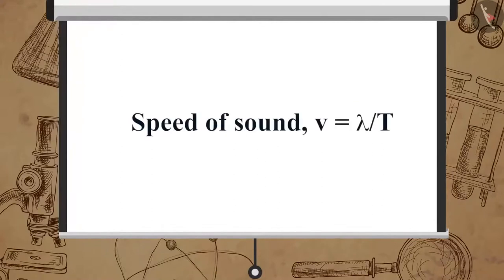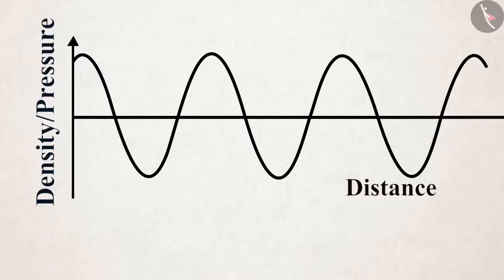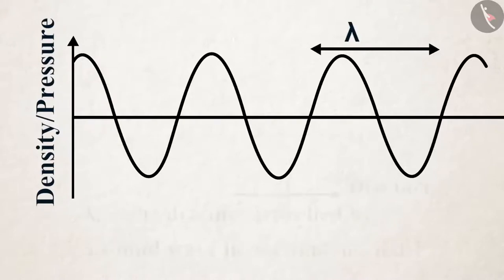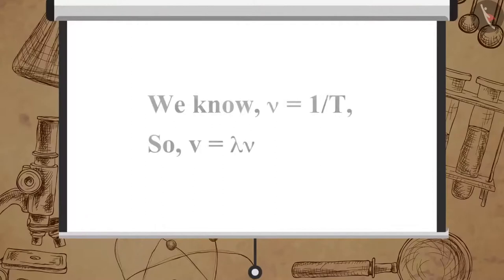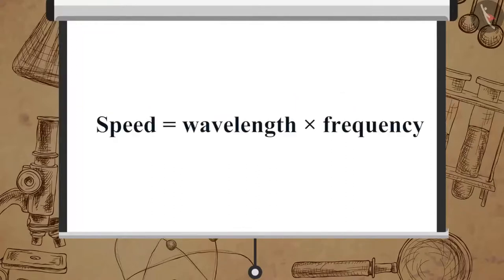Speed V is equal to lambda upon T. We know lambda is the wavelength of the sound wave, and lambda is the distance travelled by a sound wave in one time period T. We know nu is equal to 1 upon T, so speed is equal to lambda multiplied by nu. Thus, speed is equal to wavelength multiplied by frequency.